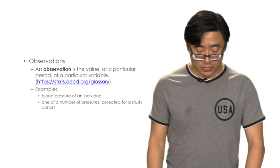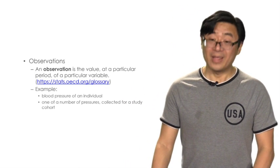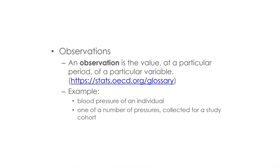First, you need to know about observations. An observation is the value at a particular period of a particular variable. This definition is based on the OECD.org website glossary. Examples of observations include blood pressure of an individual, or one of a number of pressures collected for a study cohort.